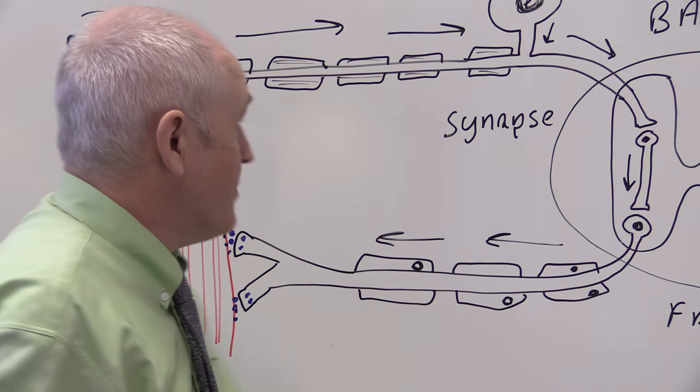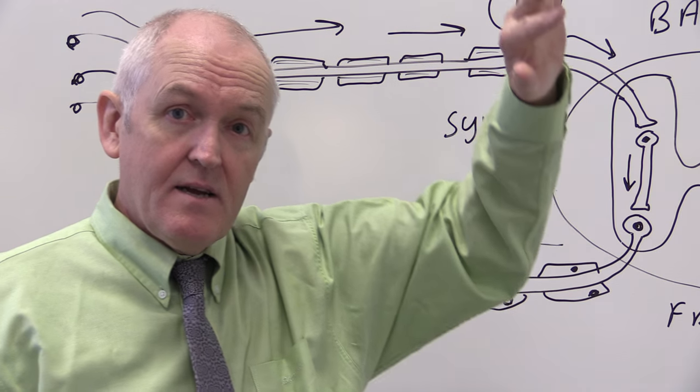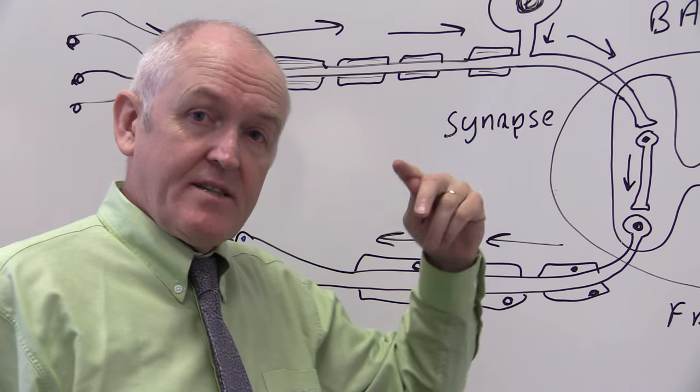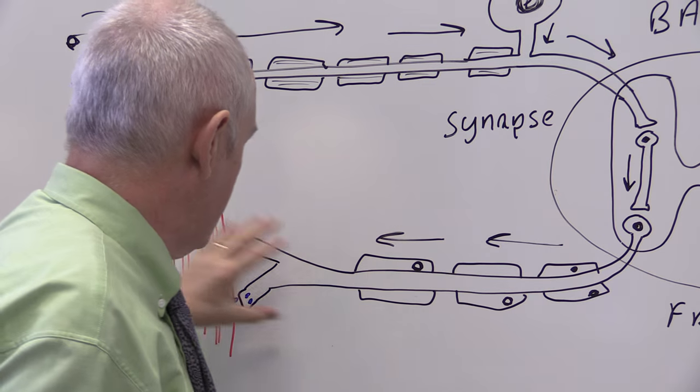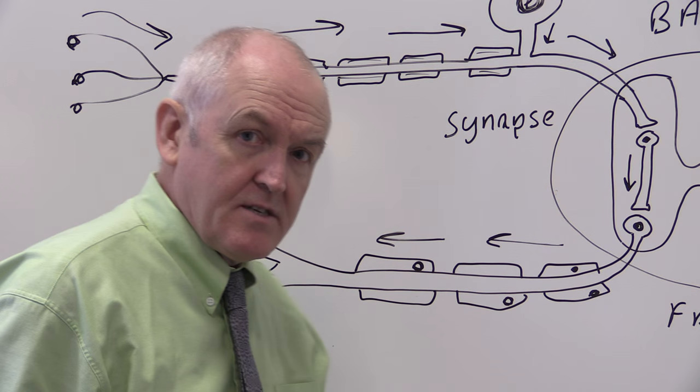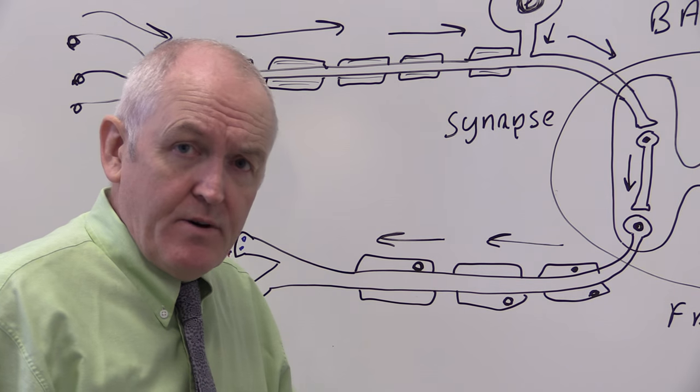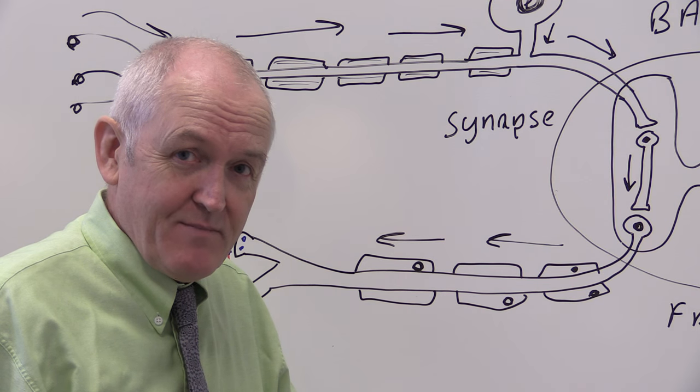If the information had to go from the sensory neuron to the brain where there's cognitive processing, then it had to go back again to the motor neuron, I think you can see there's going to be a delay, and the person could have already fallen over or there could be tissue damage.